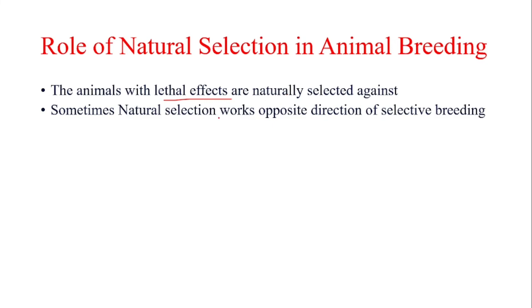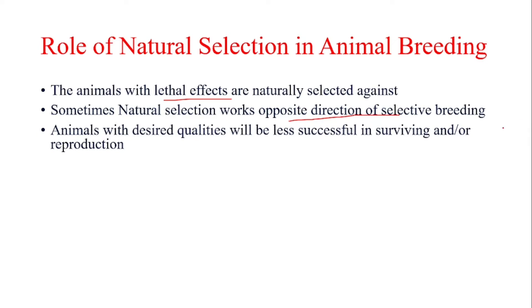Sometimes natural selection works in the opposite direction of selective breeding. For example, we may be selecting only those animals which have desirable traits and are highly producing, but natural selection can play a role against our selective breeding. Animals with desirable traits are sometimes less successful in surviving and reproduction.